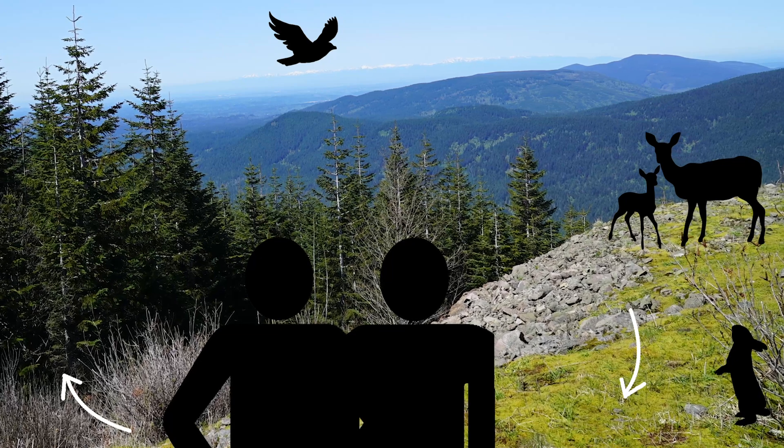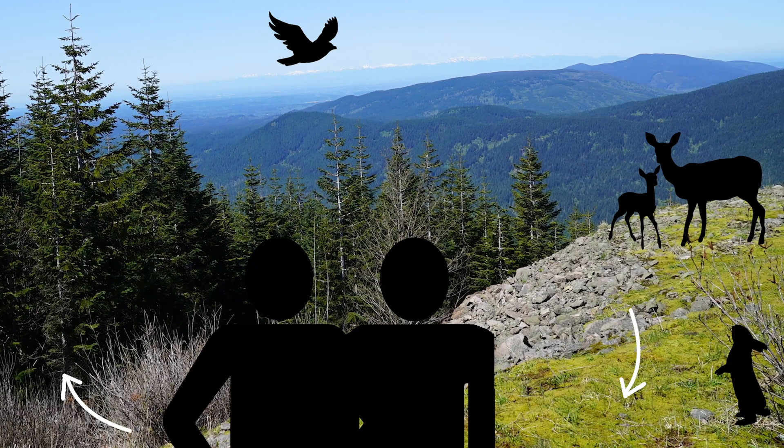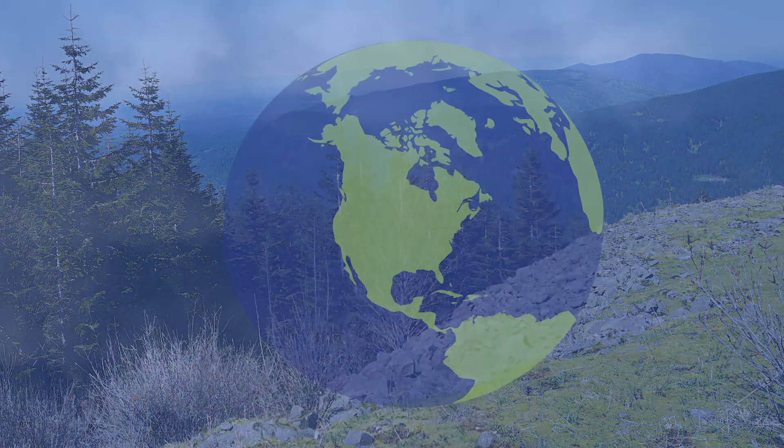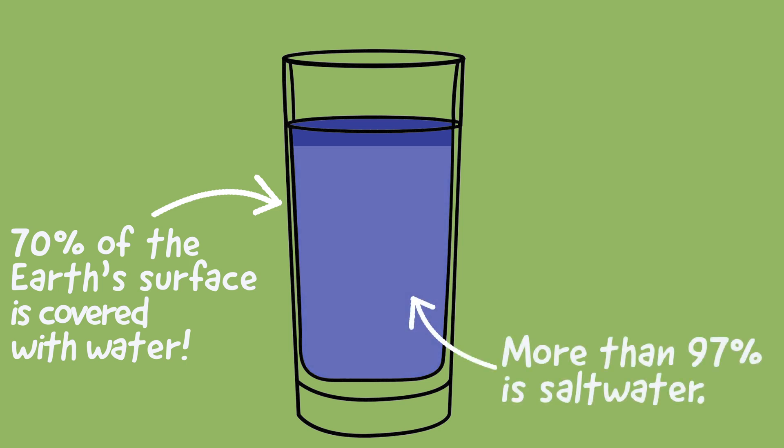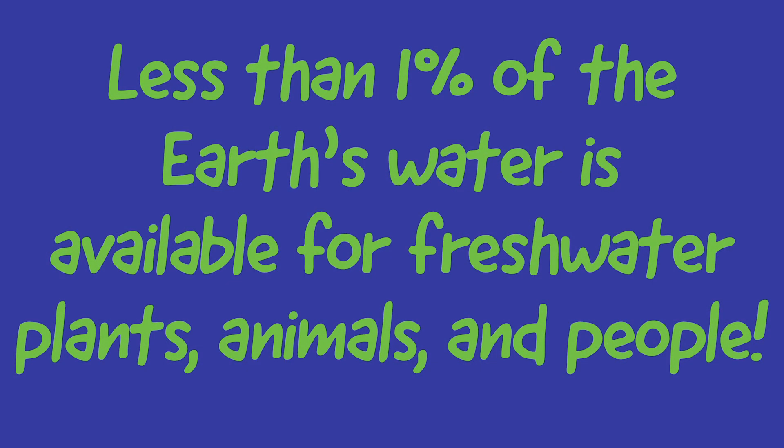All living things need fresh water to survive, but there's not a lot of fresh water on the planet. 70% of the earth's surface is covered with water. However, more than 97% of that water is salt water and over 2% is frozen in ice caps and glaciers. That leaves less than 1% of all the water on the planet to be shared by all living creatures. That's quite a job!